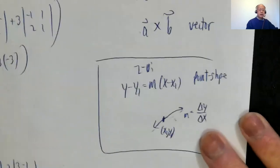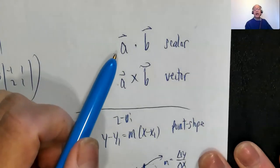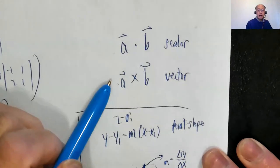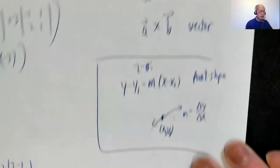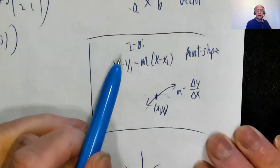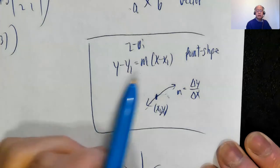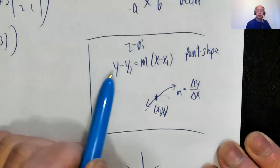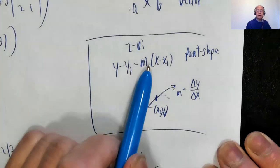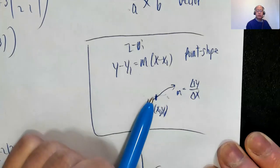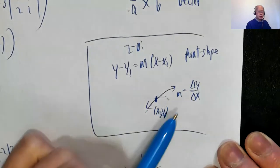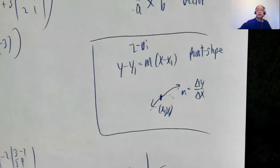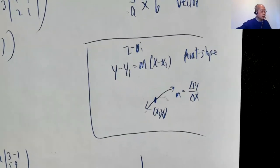To summarize: A·B (dot product) gives a scalar; A×B (cross product) gives a vector. For future reference, recall in two dimensions the point-slope form: y - y1 = m(x - x1), where m = Δy/Δx. We'll use that concept much more in a future lesson. That was section 12.4.